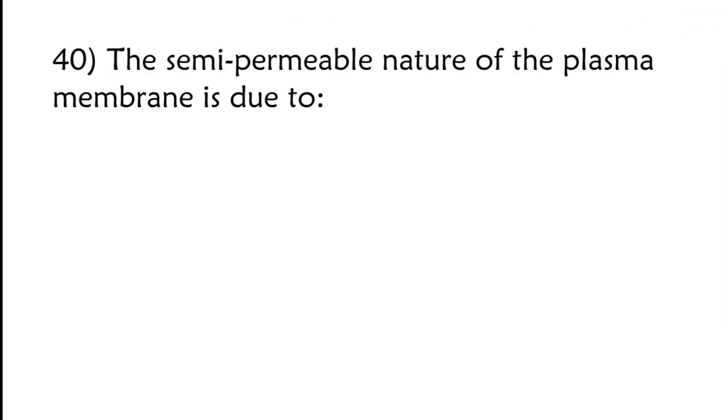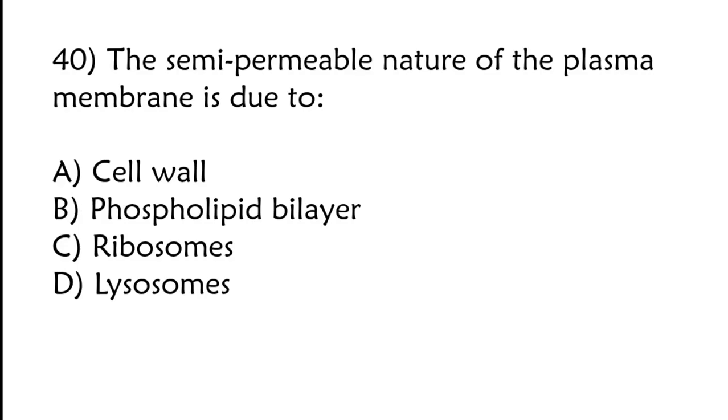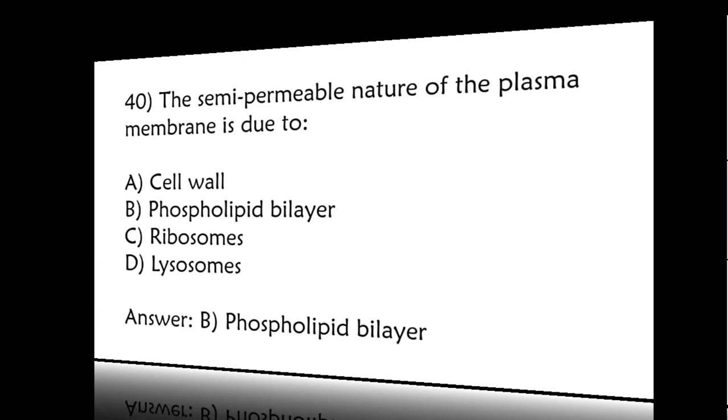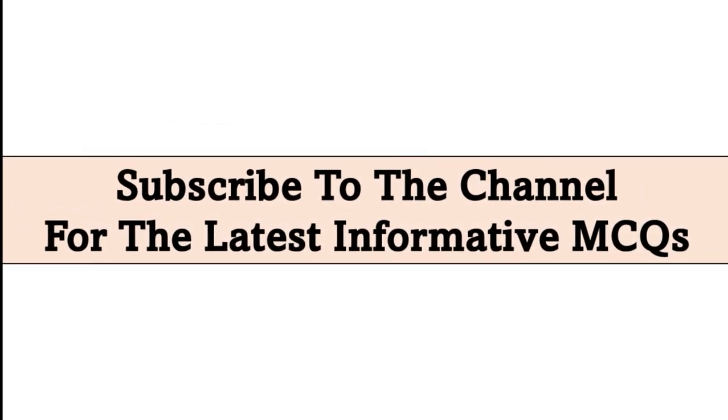The semi-permeable nature of the plasma membrane is due to: cell wall, phospholipid bilayer, ribosomes, lysosomes? Correct answer is option B, phospholipid bilayer. Thanks for watching. Subscribe to the channel for the latest informative MCQs.